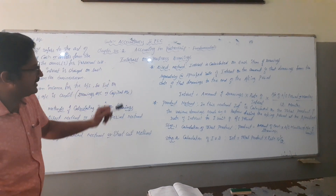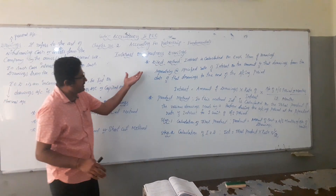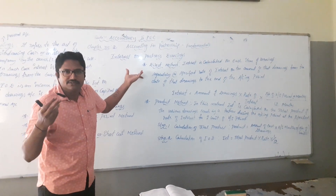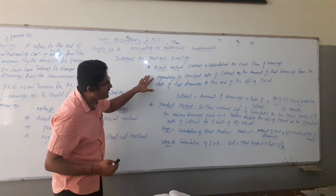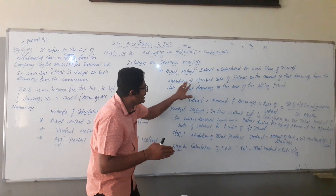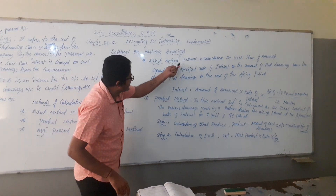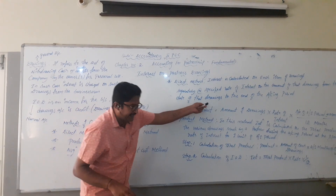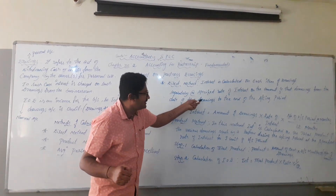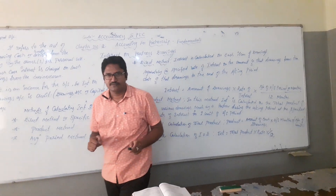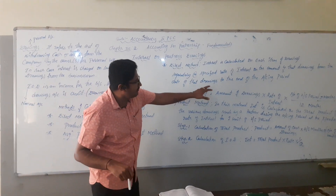Since interest is calculated on each item of drawing separately, there may be two or three partners. Interest will be calculated separately for each specific drawing. This interest on drawings is calculated from the date of drawings — when the person withdraws from the business — up to the end of the accounting period.